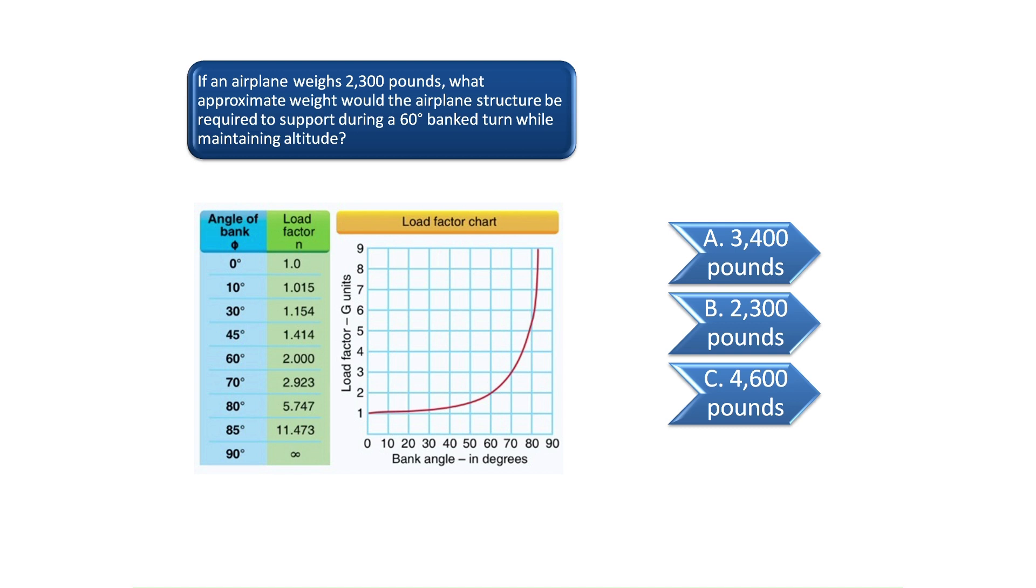Just find the angle of bank, which in this case is 60 degrees, and multiply the airplane weight by the load factor. The load factor at a 60 degree angle of bank is 2. Multiply the airplane weight by 2 to find the correct answer of 4,600 pounds. The correct answer is C.